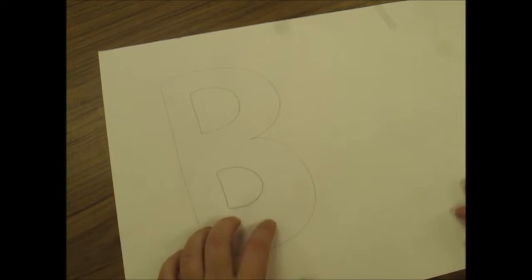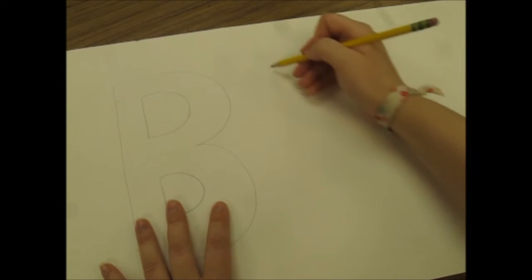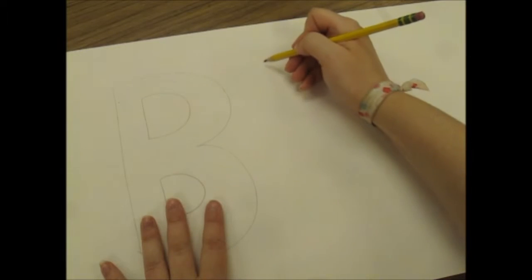This would work for a B, a D, or an O. All you would have to do is just draw an O with a hole in the middle. And you'd have a block.